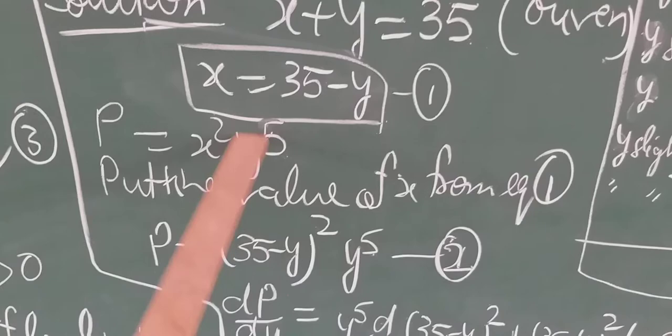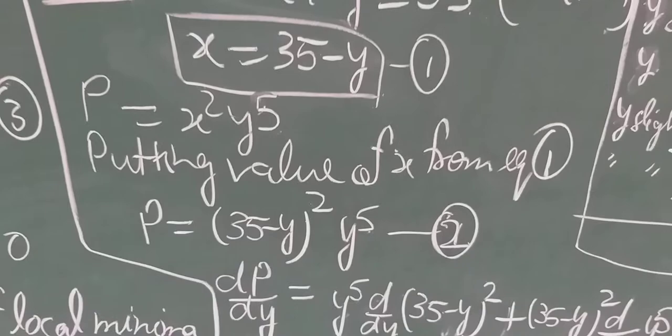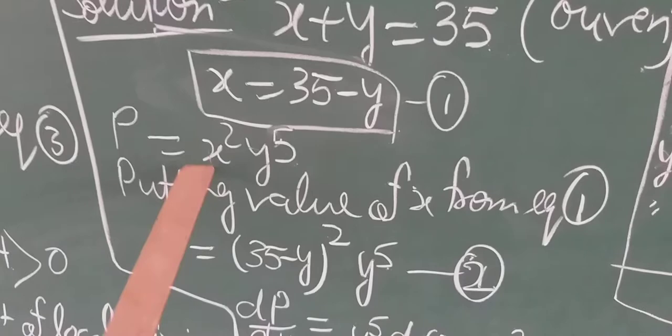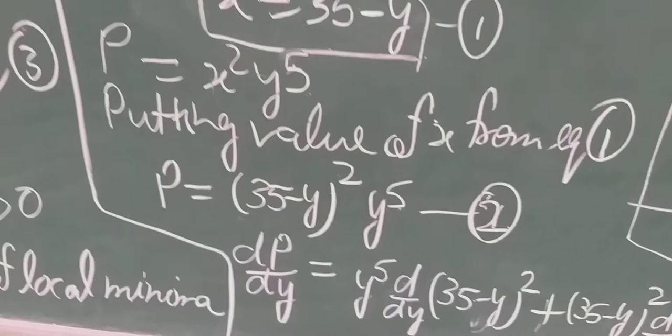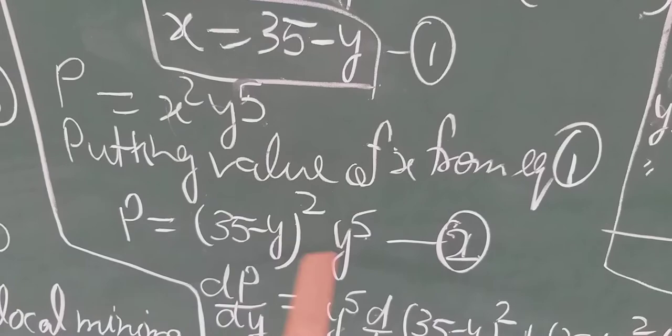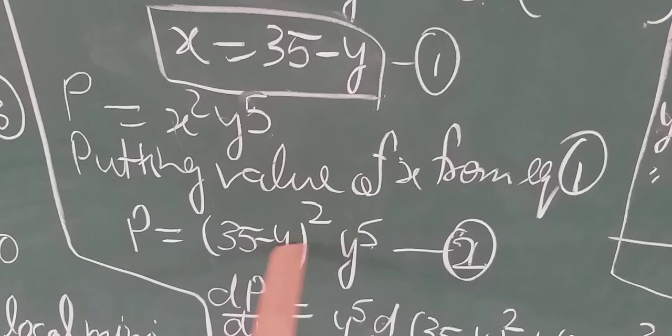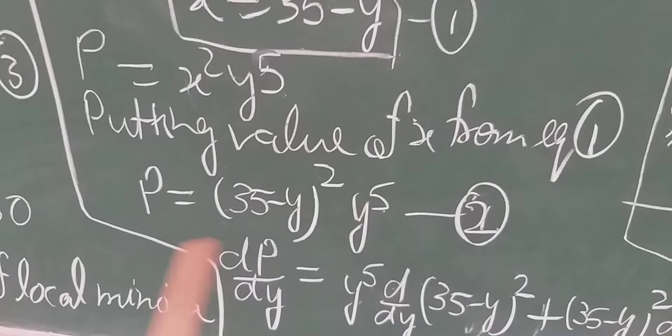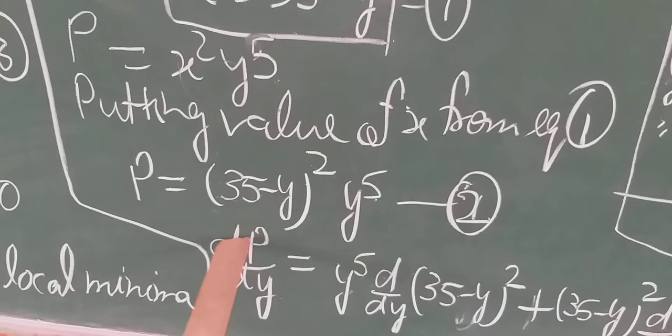We have used the sum as a substitution, and now the product P = (35 − y)²y⁵ is going to be differentiated. Since the only variable now is y, we differentiate with respect to y. Using the product rule: dP/dy = y⁵ · d/dy[(35−y)²] + (35−y)² · d/dy[y⁵].